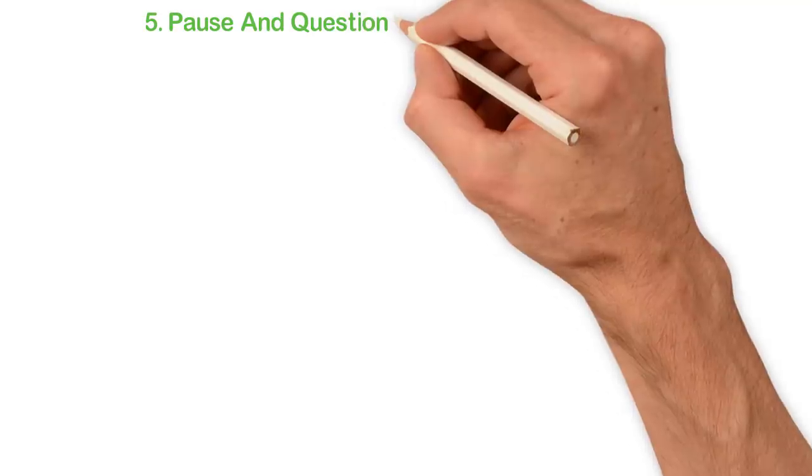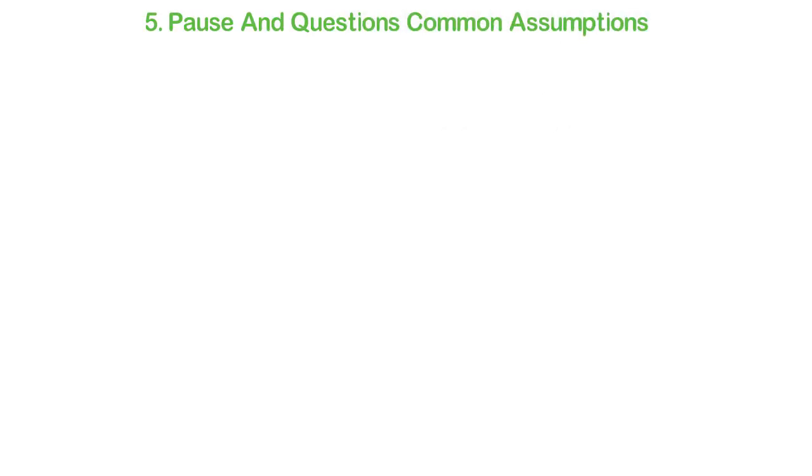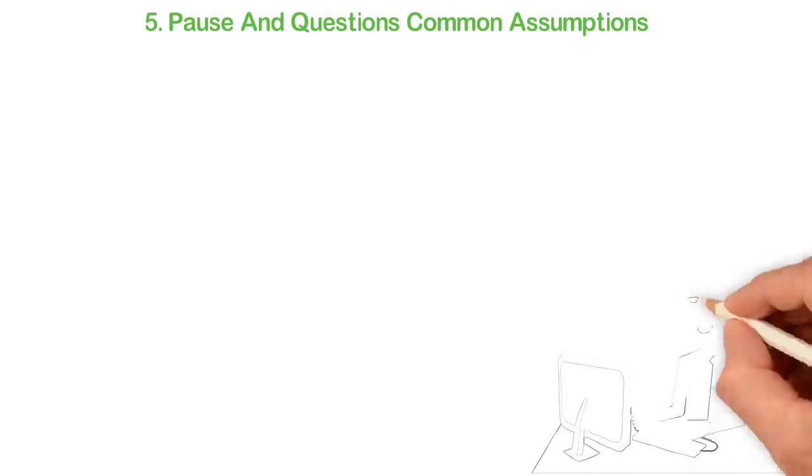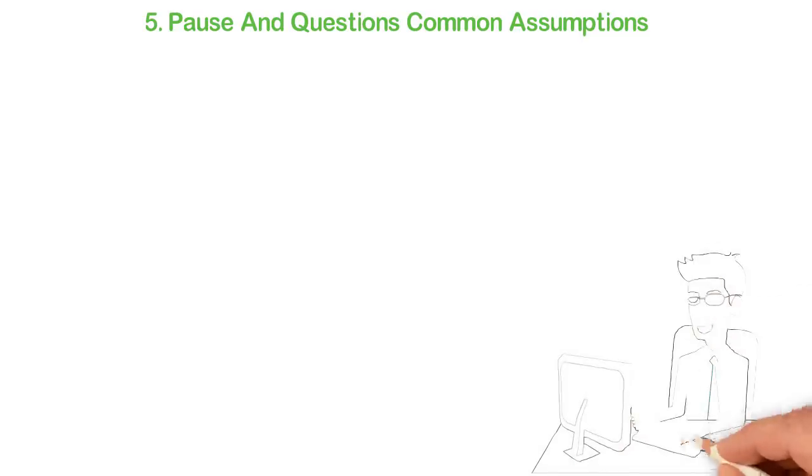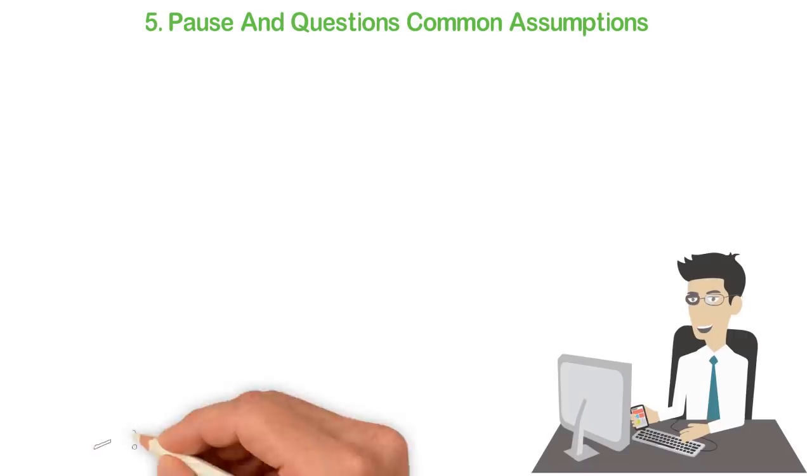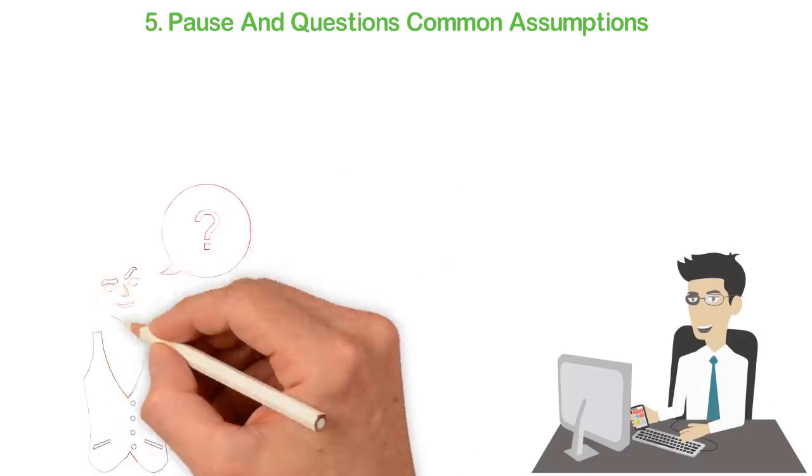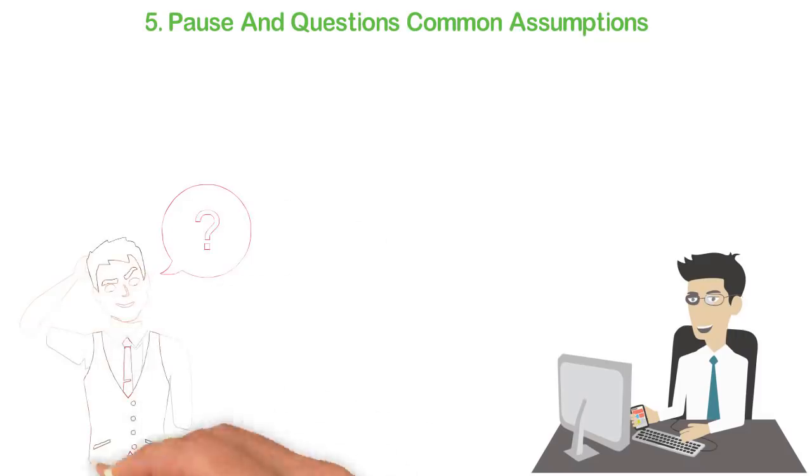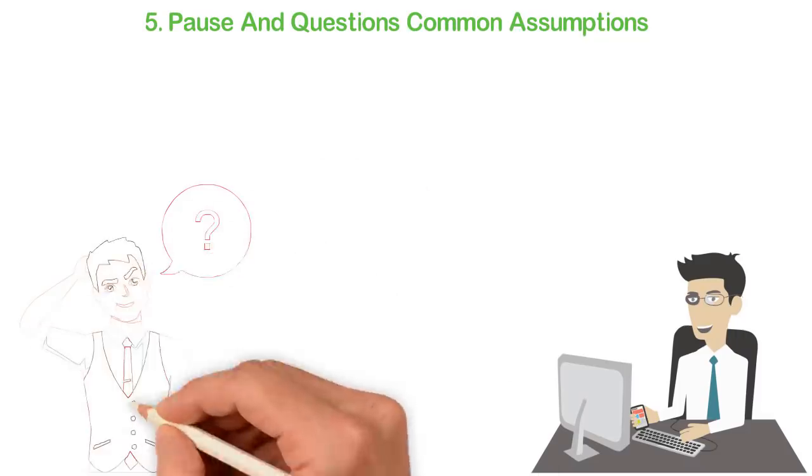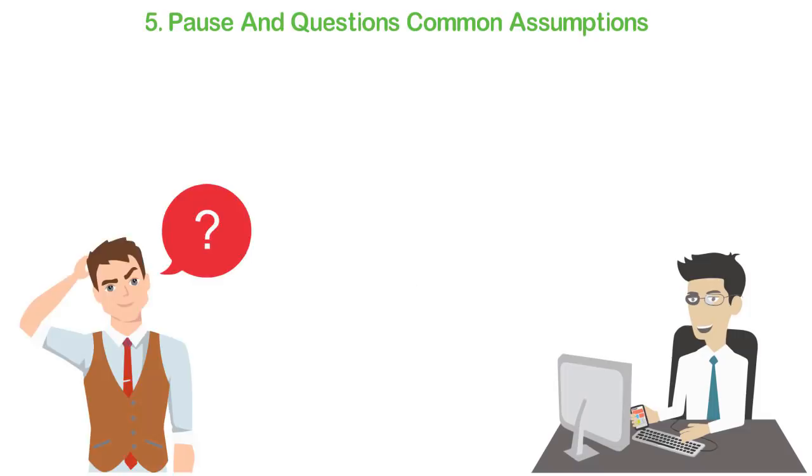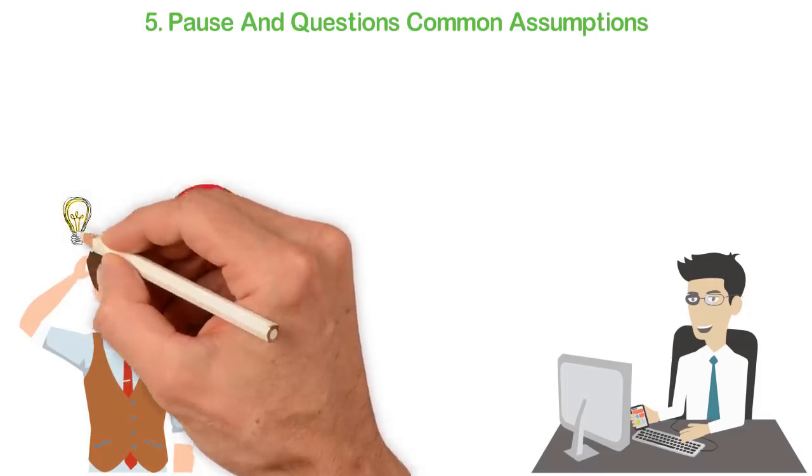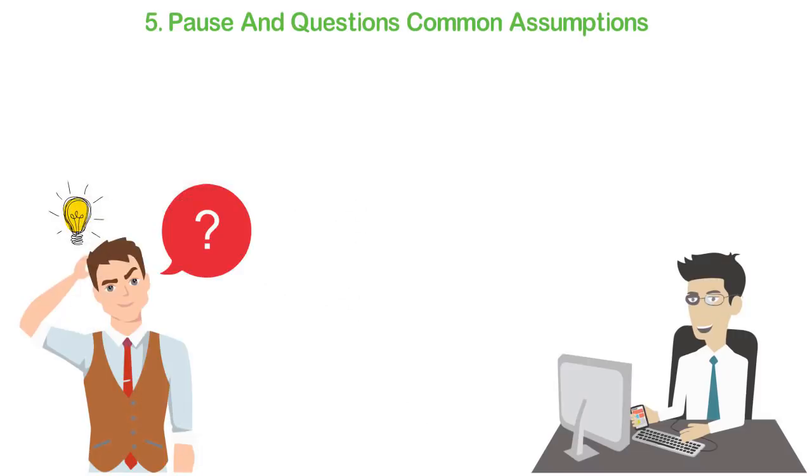5. Pause and Question Common Assumptions. The society says that I'll be happy if I'm famous. Is that true? The society says that I'll be rich if I graduate from school as one of the best students. Is that true? The society says that I'll be fine and happy if I work for big companies like Apple and Google. Is that true? Based on who I am and what I know about myself, are all these assumptions true? Make it your habit to pause and question common assumptions. This will make you to know the difference between the food that's truly right for you and the food that the society wants to feed you.